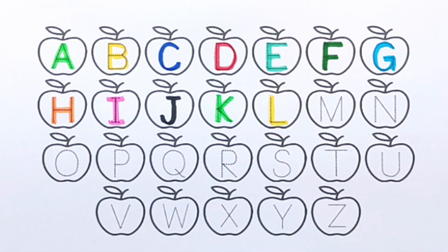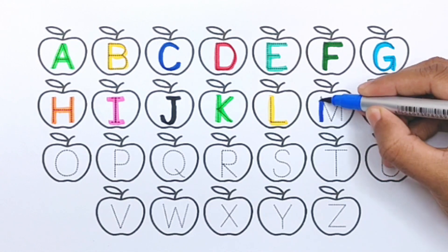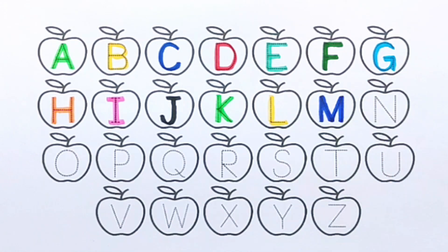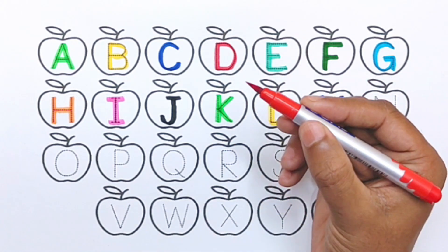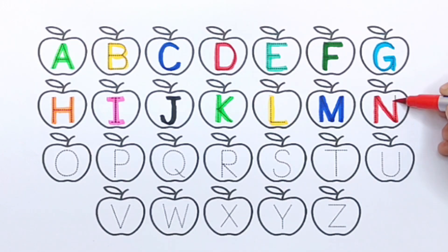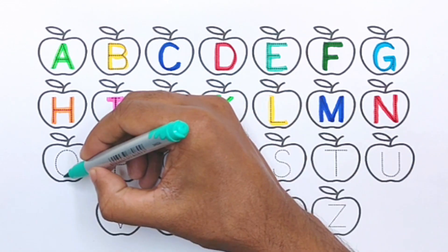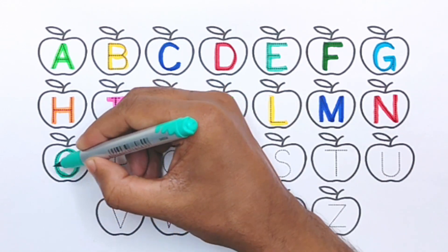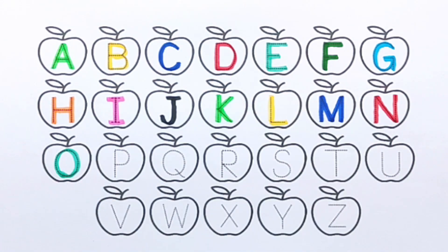Blue color. M, M for mango. Red color. N, N for nuts. Sea green color. O, O for onion. Green color. P, P for pineapple.